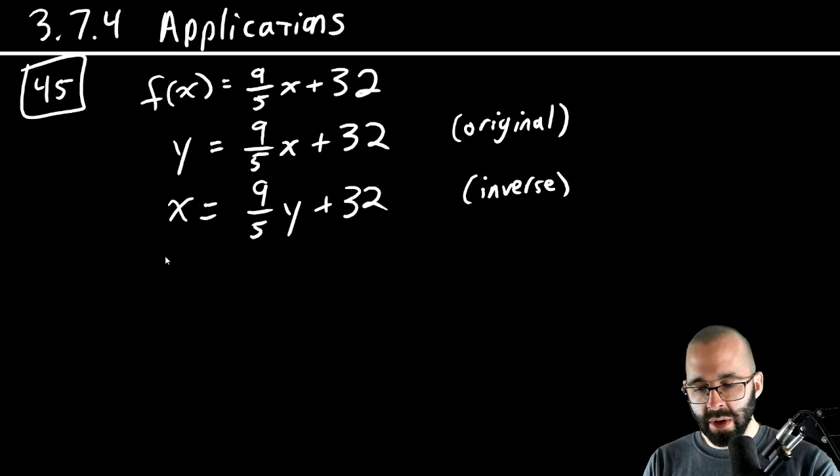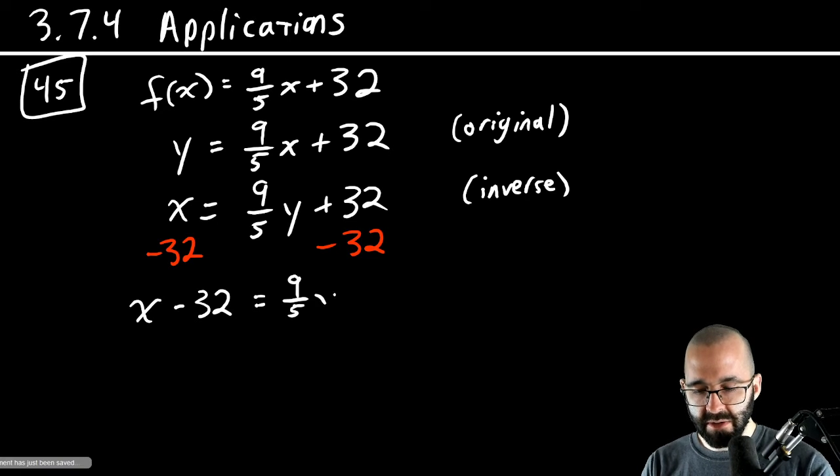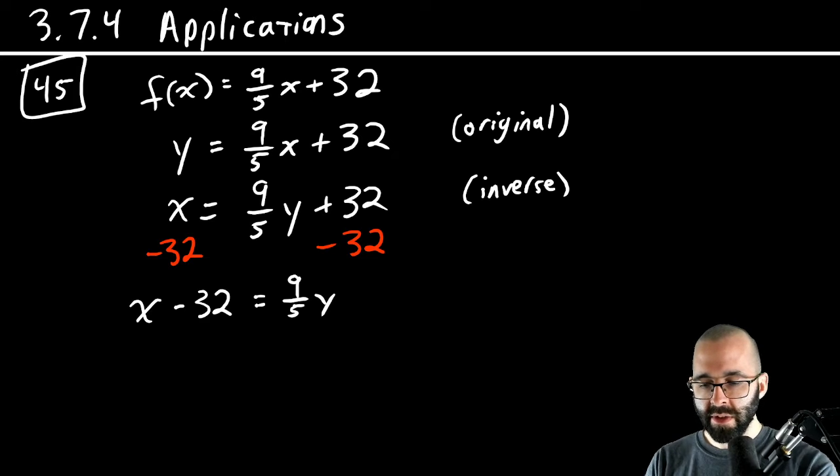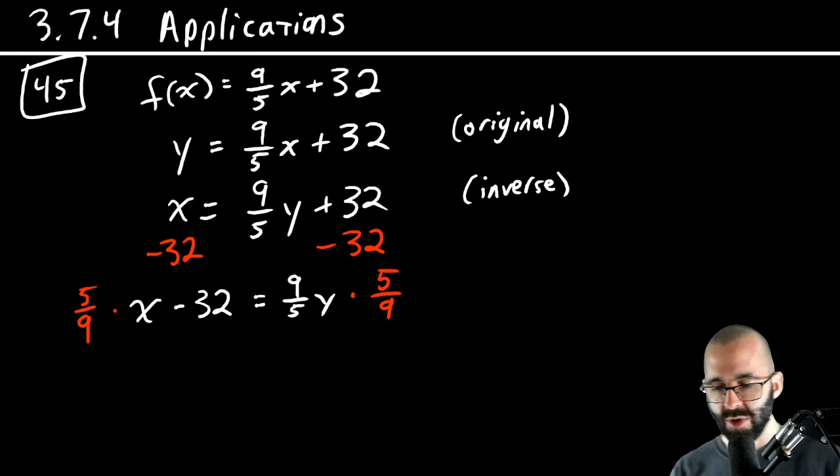So if we solve for y, we're going to subtract 32 from both sides. That's going to give us x minus 32 equals 9/5 y. Y needs to be by itself. Let's multiply by the reciprocal. Nine-fifths. Nope. Five-ninths. Nice try.